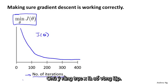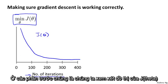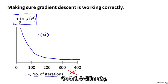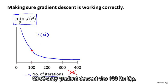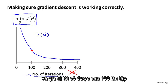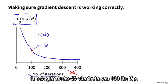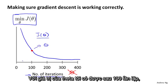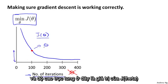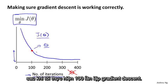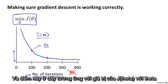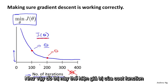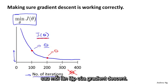Notice that the x-axis is number of iterations. Previously, we were looking at plots of J(θ) where the horizontal axis was the parameter vector theta — but this is not what this is. Concretely, what this point is: I'm going to run gradient descent for a hundred iterations, and whatever value I get for theta after a hundred iterations, I'm going to evaluate the cost function J(θ) for that value. This vertical height is the value of J(θ) for the theta I got after 100 iterations, and this point here corresponds to the value of J(θ) after 200 iterations. So this plot is showing the value of your cost function after each iteration of gradient descent.